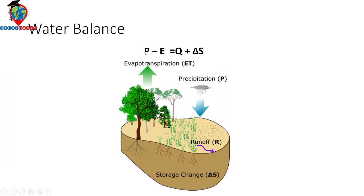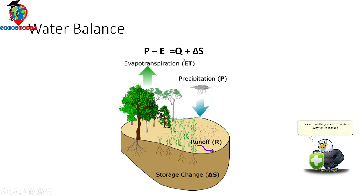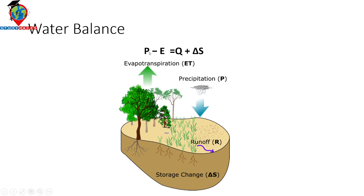The water balance formula is: Precipitation minus Evapotranspiration equals Surface Runoff plus Water Storage. Using this formula, we can find out the water balance. For that, we need to calculate monthly precipitation and also monthly evapotranspiration. For precipitation, we can use different satellite images such as CHIRPS or TRMM satellite data, or you can also use ground truth precipitation data.